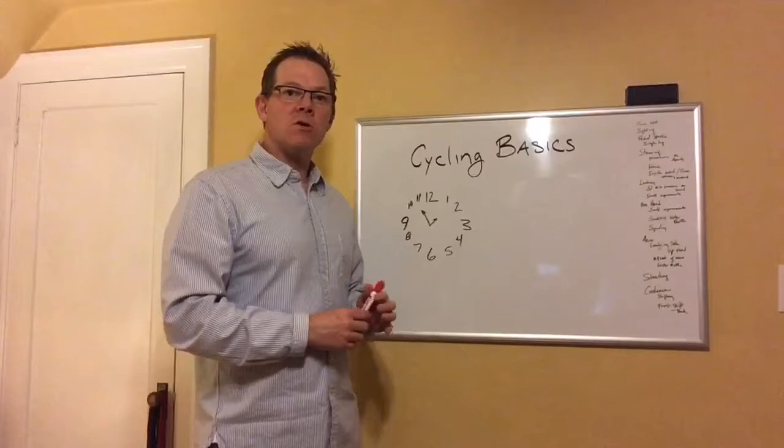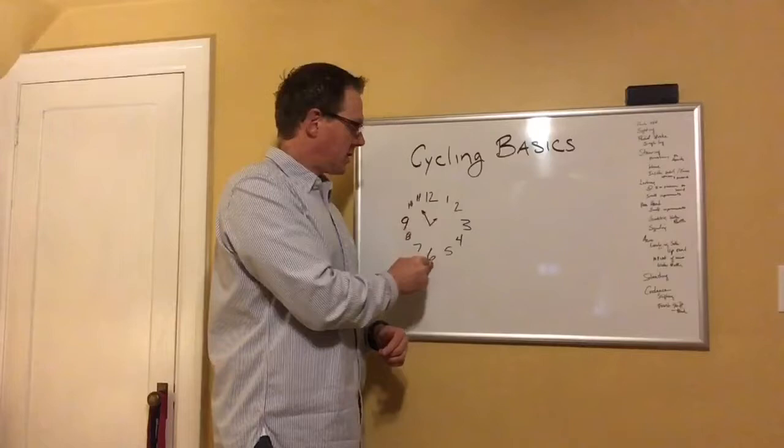So if we think about a clock and then 12 is the top of your pedal stroke, 6 would be the bottom, 3 would be out in front of you, 9 o'clock would be out behind you.